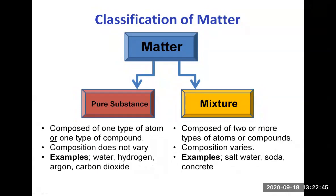Matter can be classified into pure substances or mixtures. Pure substances are composed of one type of atom or one type of compound, so you can give them a formula because the composition does not vary. For example, water is always H2O, hydrogen gas is H2, argon is Ar, and carbon dioxide is CO2. These are examples of single atoms like argon or compounds like water and carbon dioxide.